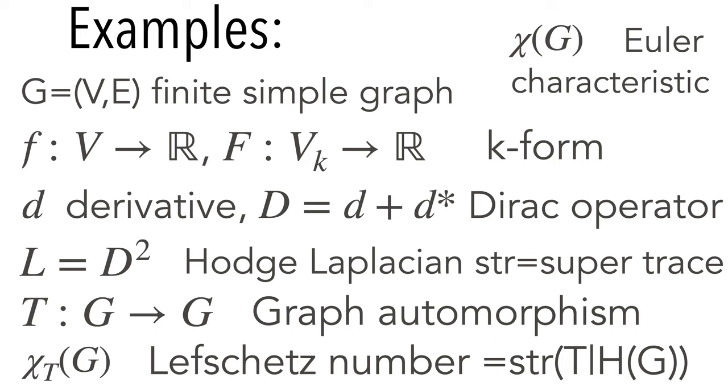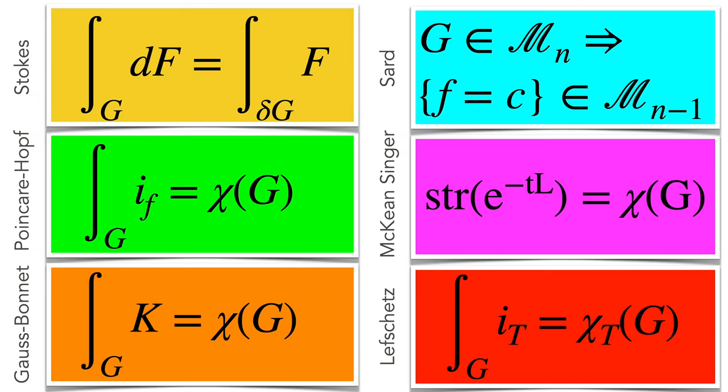I just want to illustrate this with a few adaptations of continuum theorems to discrete. First, the definitions. I need a few definitions. We define differential forms and graphs play the role of the space. We can then get an exterior derivative. We have, for example, homology groups or Lefschetz numbers. Here are six theorems. I'm not going much into them, but will illustrate three.